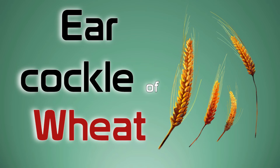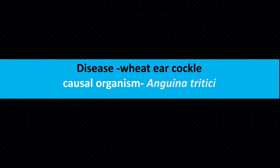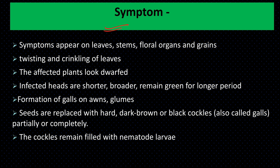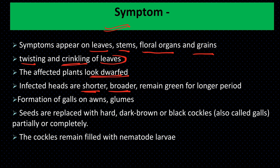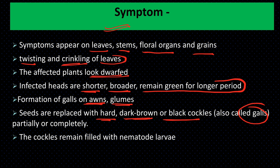Ear cockle of wheat is caused by a nematode, Anguina tritici. Symptoms appear on leaves, stems, floral organs, and grains. The nematode causes twisting and crinkling of leaves. Affected plants look dwarf; infected heads are shorter, broader, and remain green longer. Galls form under awns and glumes; seeds are replaced by hard, dark-brown or black cockles (galls) filled with nematode larvae.